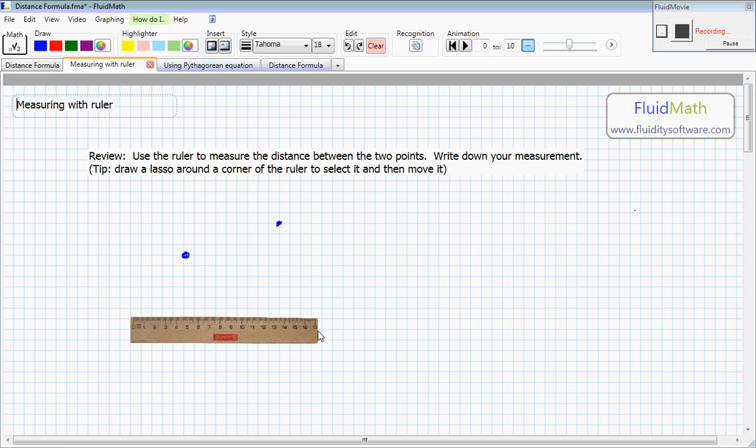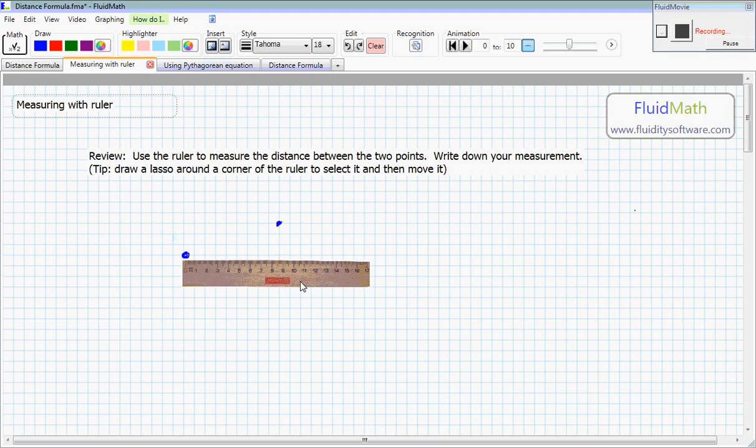In FluidMath you can select an object like the ruler by lassoing a corner of it. It'll become red like this. So let's move this up here.